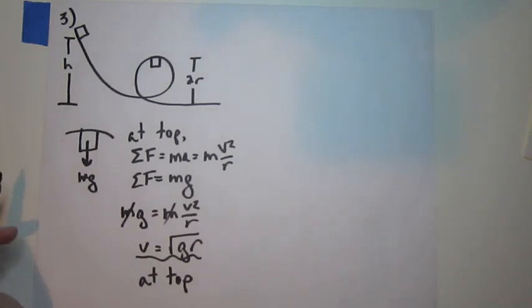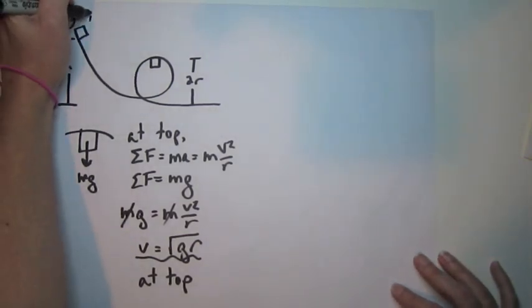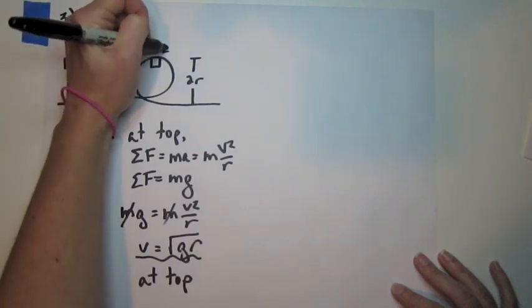Okay, so now we're going to call this time one—the instant that it's released—this time two—the instant that it's at the top of the circle. That's the trickiest part of the trip, of the journey.